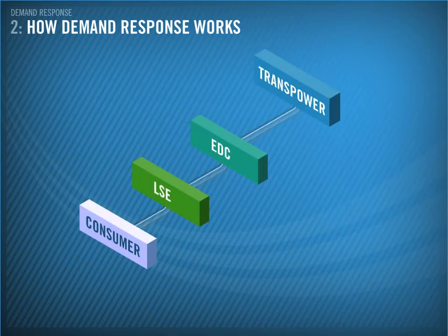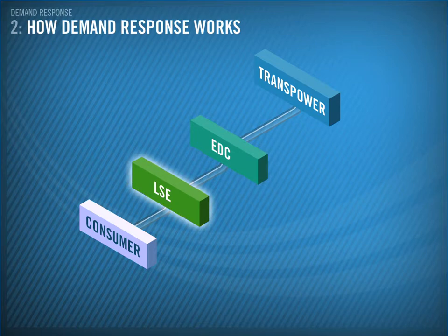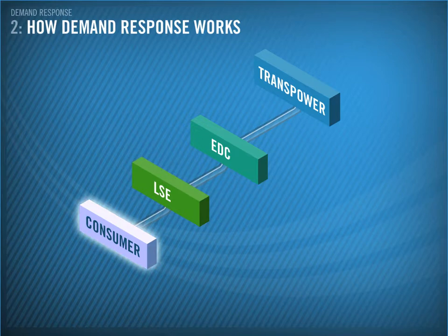Let's have a look at the traditional demand-side supply chain in the New Zealand electricity industry. Transpower connects directly with electricity distribution companies, for example lines companies, who enable load-serving entities, for example electricity retailers, to sell power to consumers.